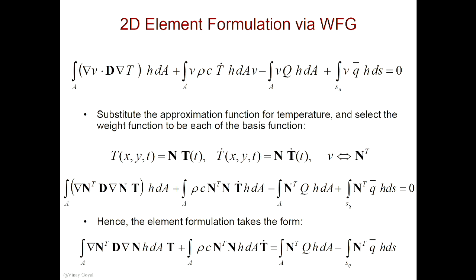For a quadrilateral element — how many nodes would I have if it's a linear quadrilateral element? 1, 2, 3, and 4. Excellent. So 4 nodes. Again, I have to keep the convention counterclockwise — make sure you have that clear. And now since I have 4 nodal unknowns, how many unknown quantities do I need to have? 4 unknown coefficients. Therefore I need 4 terms in my approximation function.